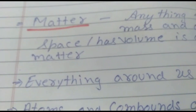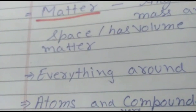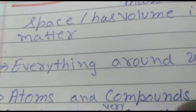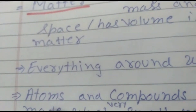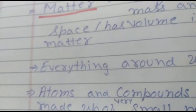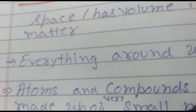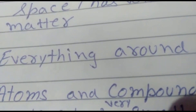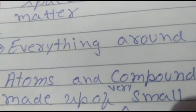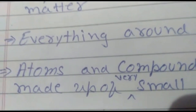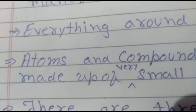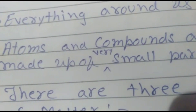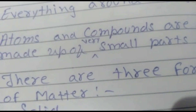Everything around us that can be touched has mass. For example, take a pen or a coin — when you keep the coin it takes up space, and when you pick it up you feel something in your hand. Same with the pen: wherever you keep it, it occupies that space, and when you pick it up you feel its weight. Atoms and compounds are also made up of small particles of matter.